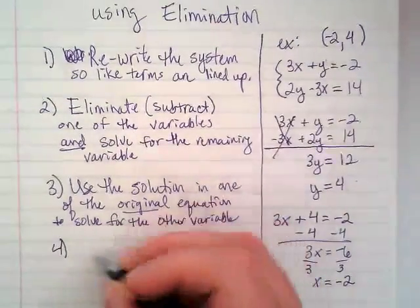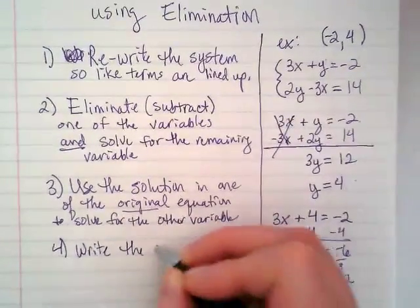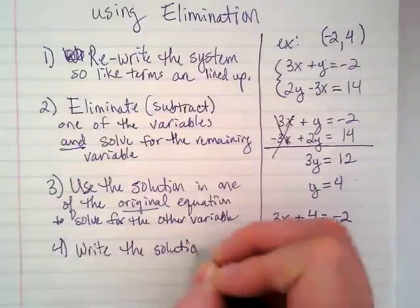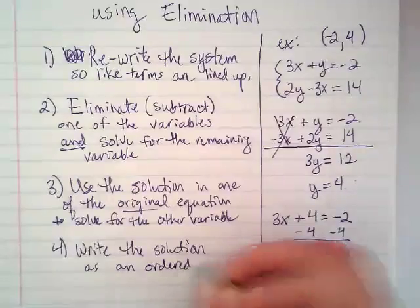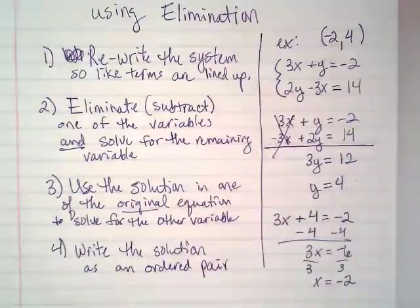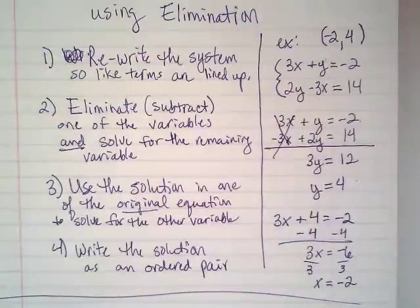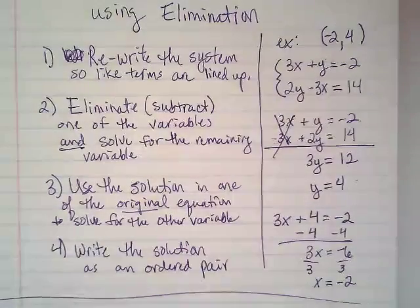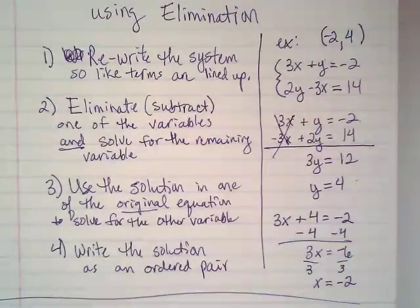Step 4, we already kind of did this, but I want it in your steps. Write the solution as an ordered pair. Now, this was great because in our first two equations, 3x and negative 3x were already opposites of each other. What if they're not?